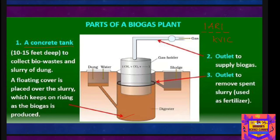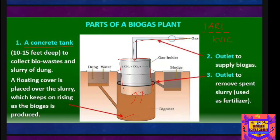Over the slurry in the concrete tank, there is a floating cover placed on top. As gas is produced in the tank due to microbial activity, the floating cover rises upward. The biogas plant has an outlet through which gas can be supplied to nearby houses. The spent slurry is removed through another outlet and may be used as a fertilizer.